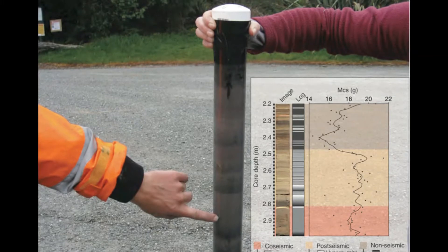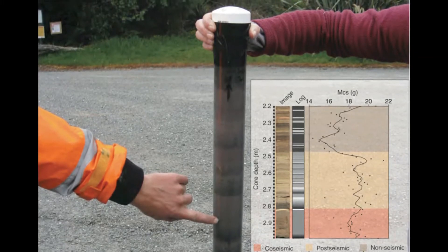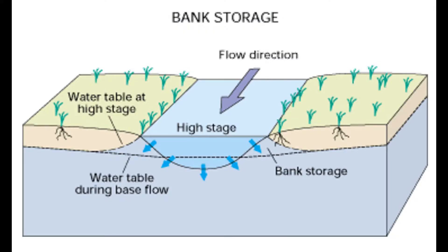In some streams, gain or loss is persistent. However, some streams will have varying flow directions that can change quickly, resulting in focused recharge near the streambank. This interaction takes place in nearly all streams at some point, and the rapid rise in stream stage causes water to move from the stream into streambanks. This is known as bank storage.